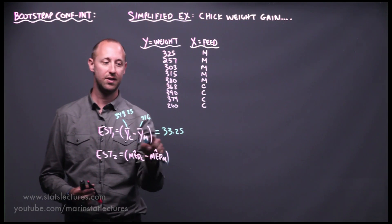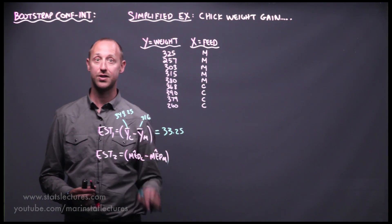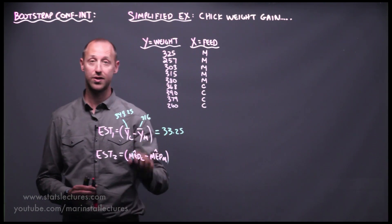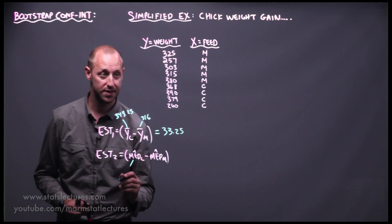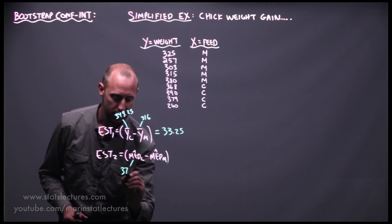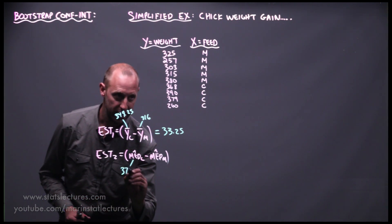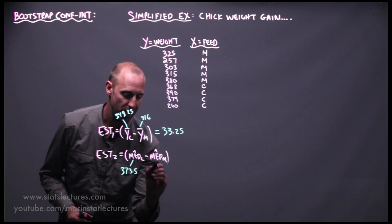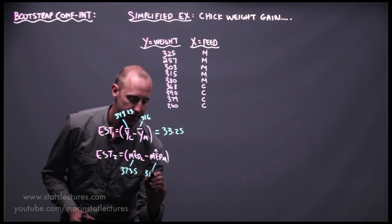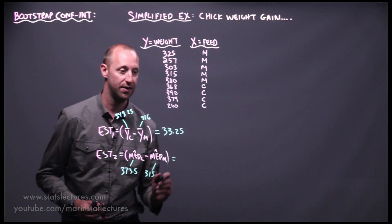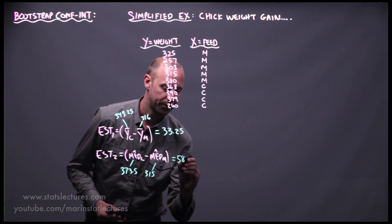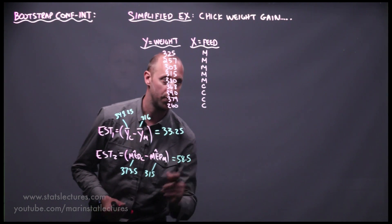Estimate two is the difference in sample medians: the median weight for casein minus the median for meat meal. The sample median for casein is 373.5, for meat meal it's 315, giving a difference in medians of 58.5.